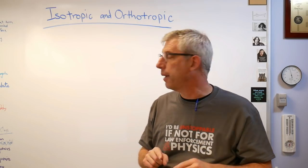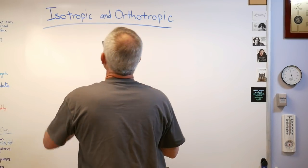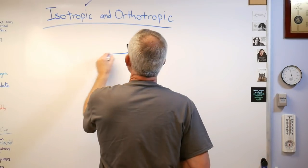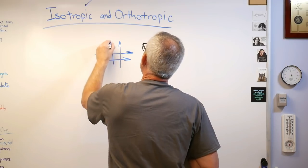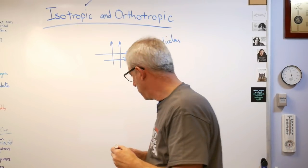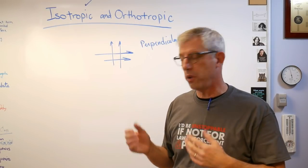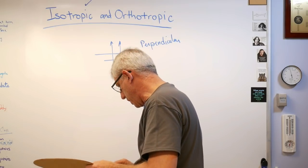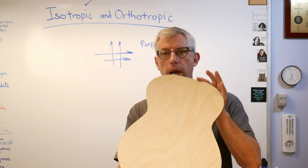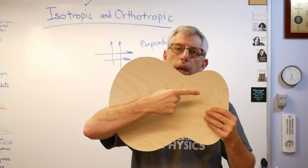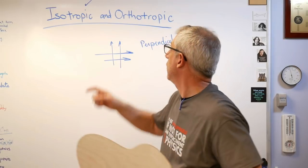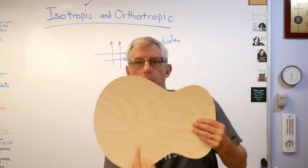So what does orthotropic mean? It sounds like orthogonal — that's exactly what it means. You've got two directions you're interested in and they are perpendicular, or orthogonal, to each other. The material properties can be described in one of two directions. I have a sheet of plywood here — one ply has the grain going one way, and the next ply has the grain going the perpendicular way. The two axes are 90 degrees to one another, so this is an orthotropic material.